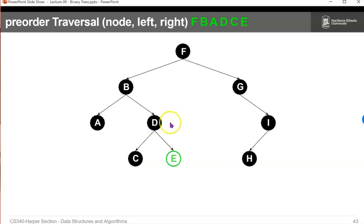Now that means we're done with this guy. So, we go G, which is node, and then we're going to do left, right. So, it'll be I, and then we'll do left, right, and then the H. And that's our preorder traversal.